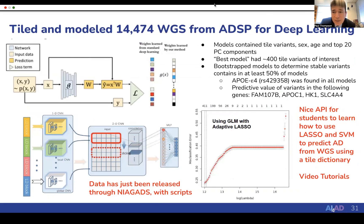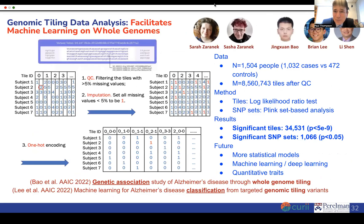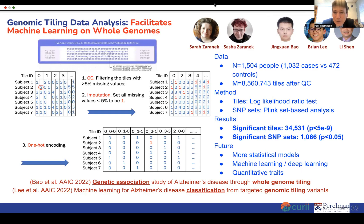A wonderful API—a programming interface—has been created where new students and researchers can use this data conveniently in conjunction with traditional machine learning models like Lasso and support vector machines to predict Alzheimer's disease from whole genome sequences, along with video tutorials. Work by Jingquan Bao and Brian Lee in Li Shen's lab at UPenn, published as abstracts at this year's AAIC, illustrated using machine learning on whole genomic tiles to classify AD and discover new variants. Over 1,000 SNP sets not recoverable using conventional univariate genome screening are now being followed up for replication in incoming ADSP genomic data.